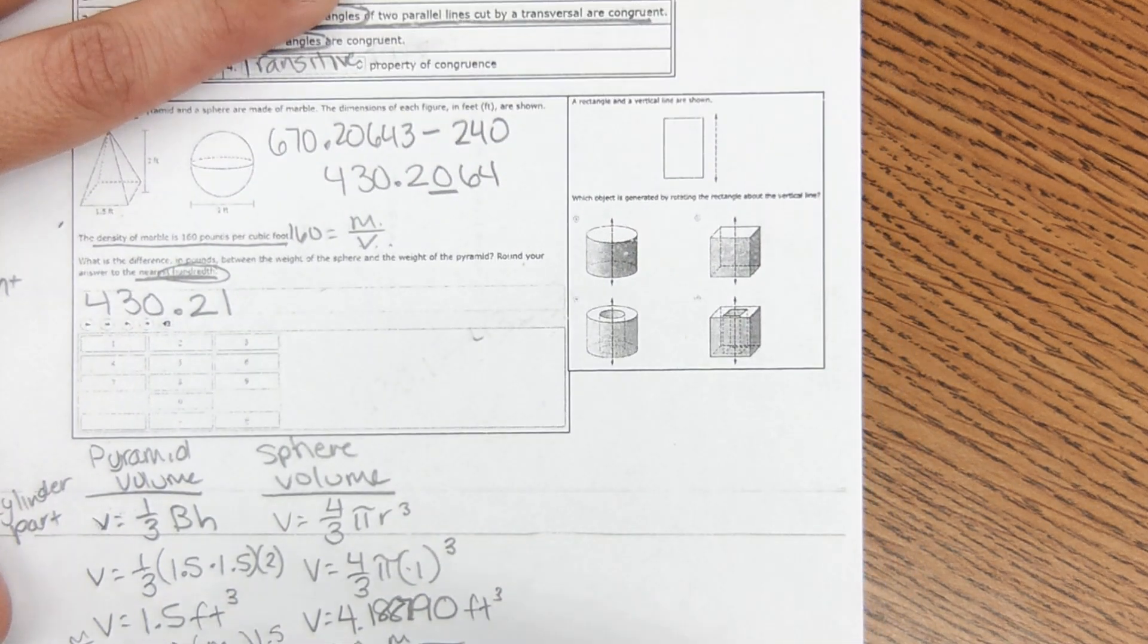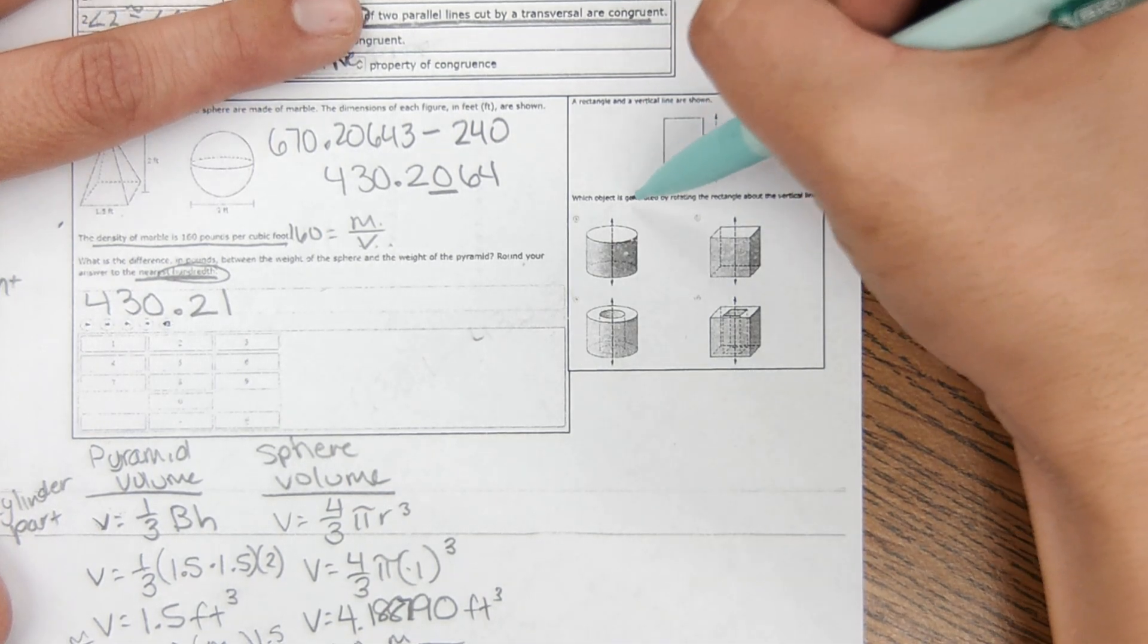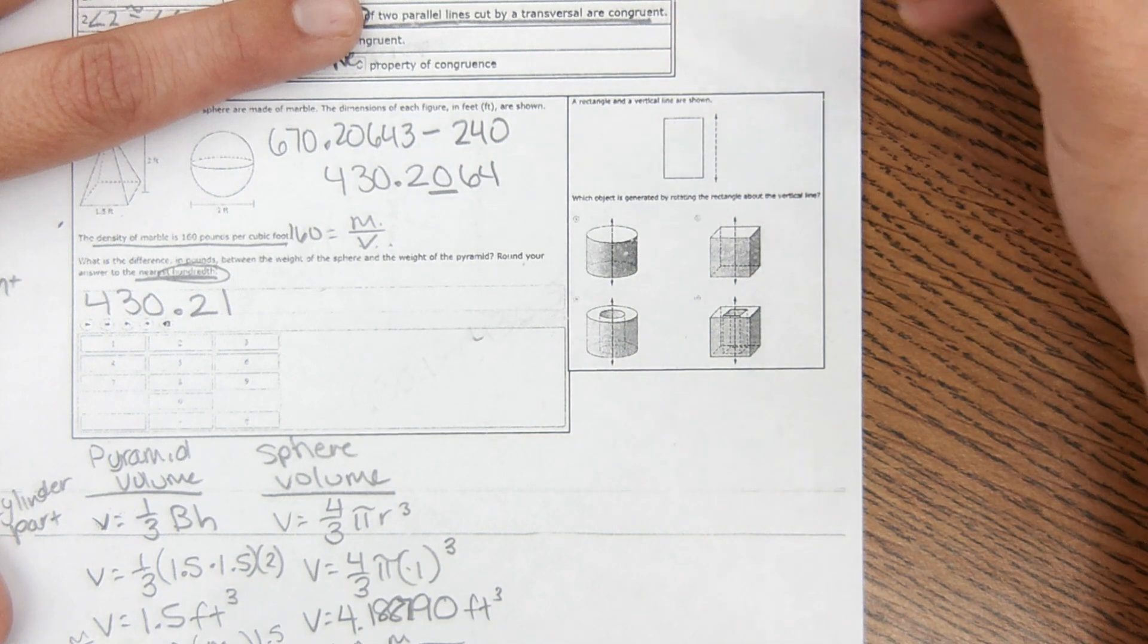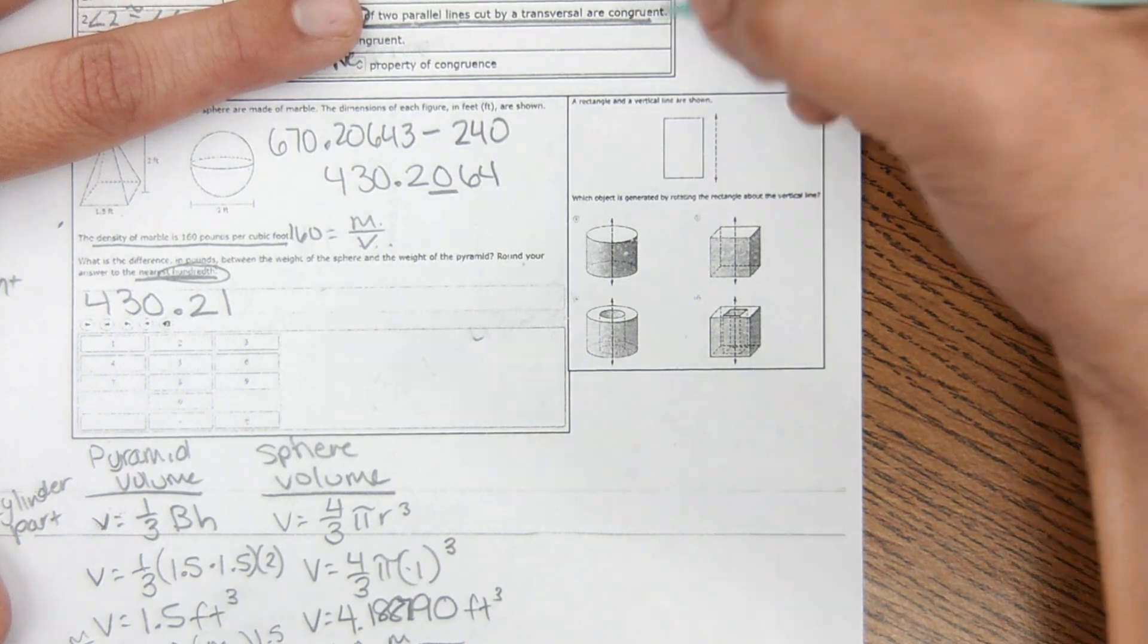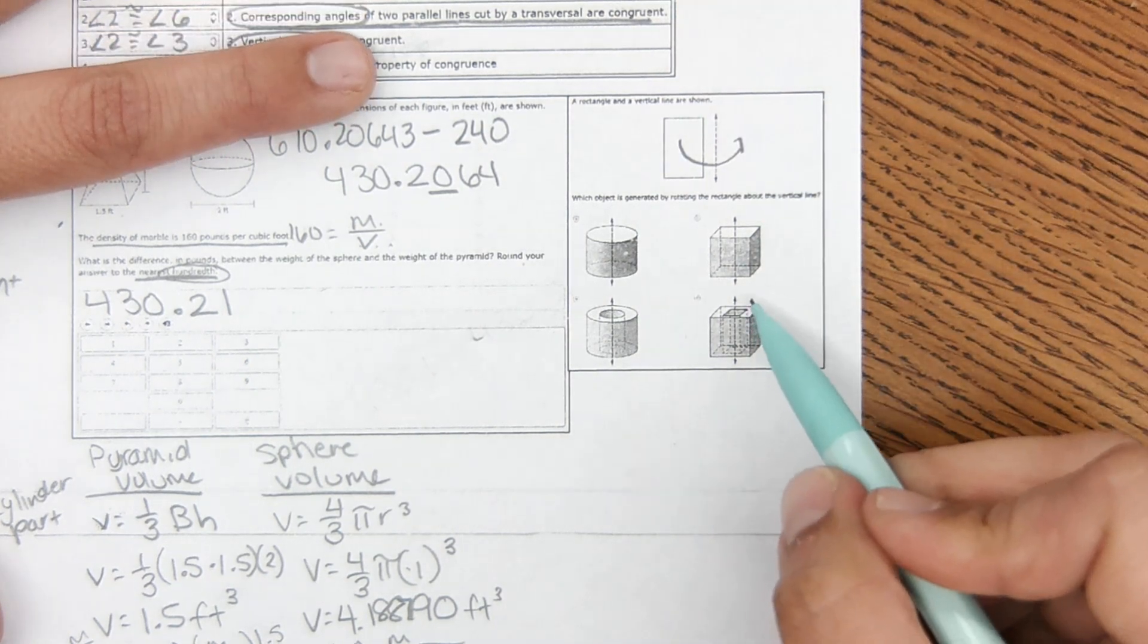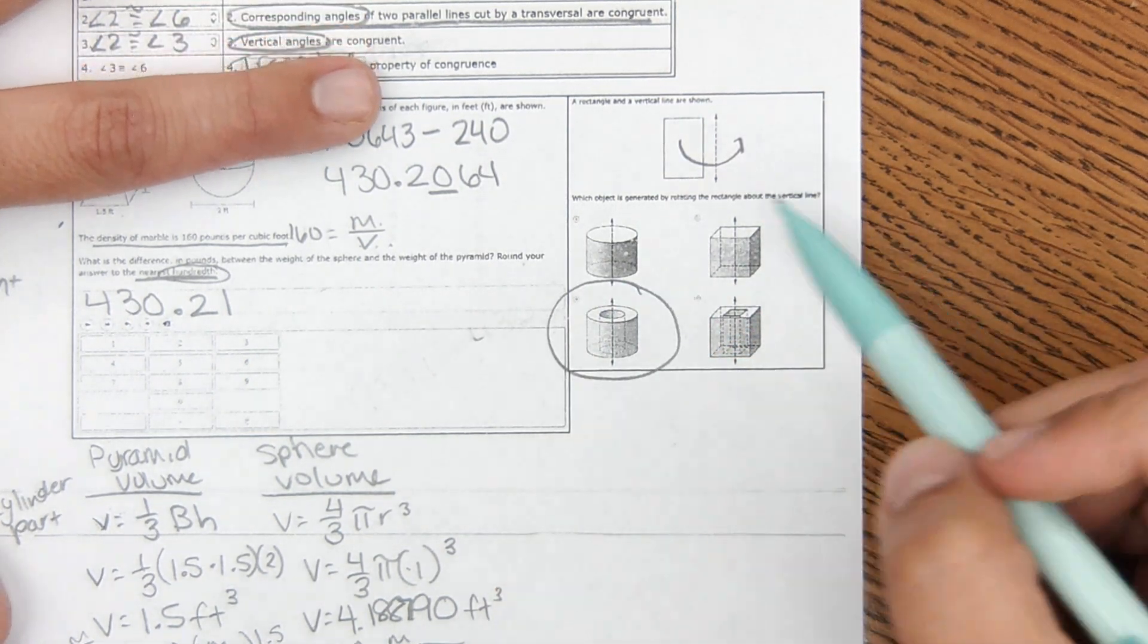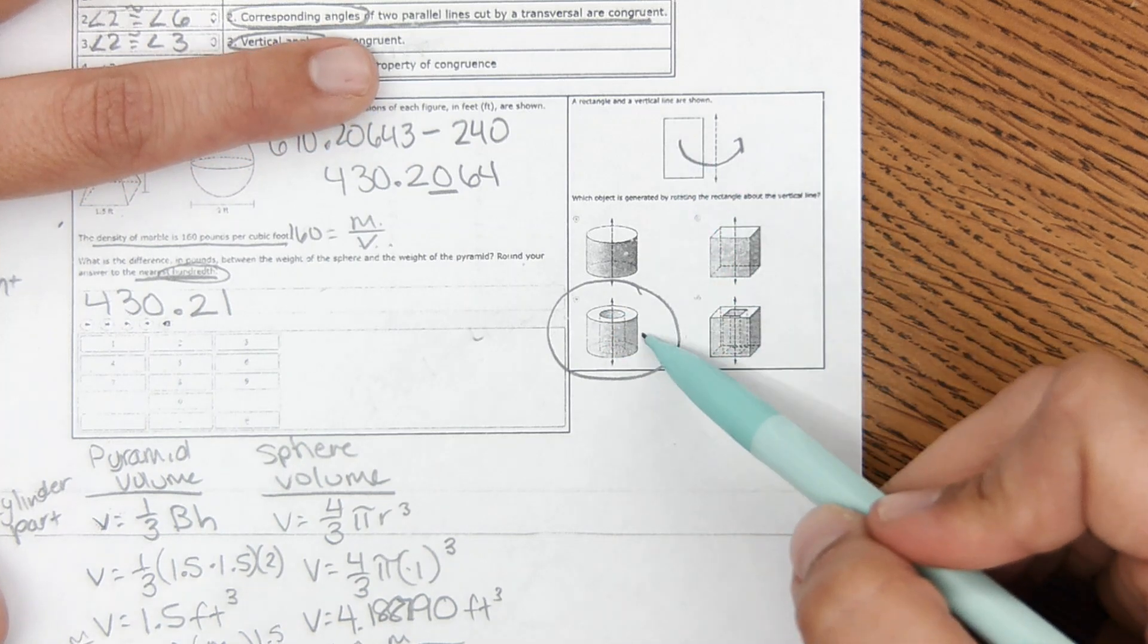Okay, the next one says a rectangle and a vertical line are shown, which object is generated by rotating the rectangle around the vertical line. So if you rotated this shape around the vertical line, which shape would it make? It would make this one. So if you rotated it around, it would make this shape.